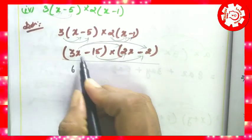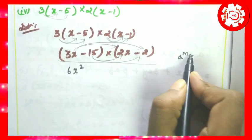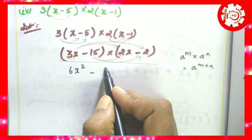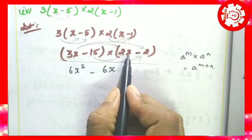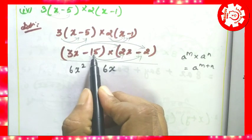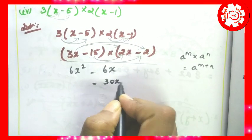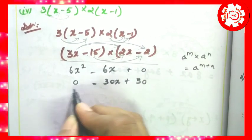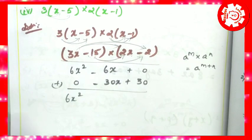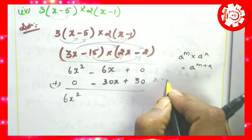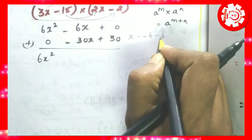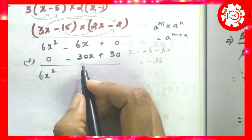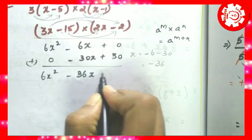Plus into plus is plus. 3 times 2 is 6, x into x is x squared — so 6x squared. Applying the rule a to the power m plus n. Then first with second: plus into minus is minus, 3 times 2 is 6 — minus 6x. Then minus 30. Same sign: add and put the same sign. Minus 36 — applying addition of integers rules. This is the fundamental operation.